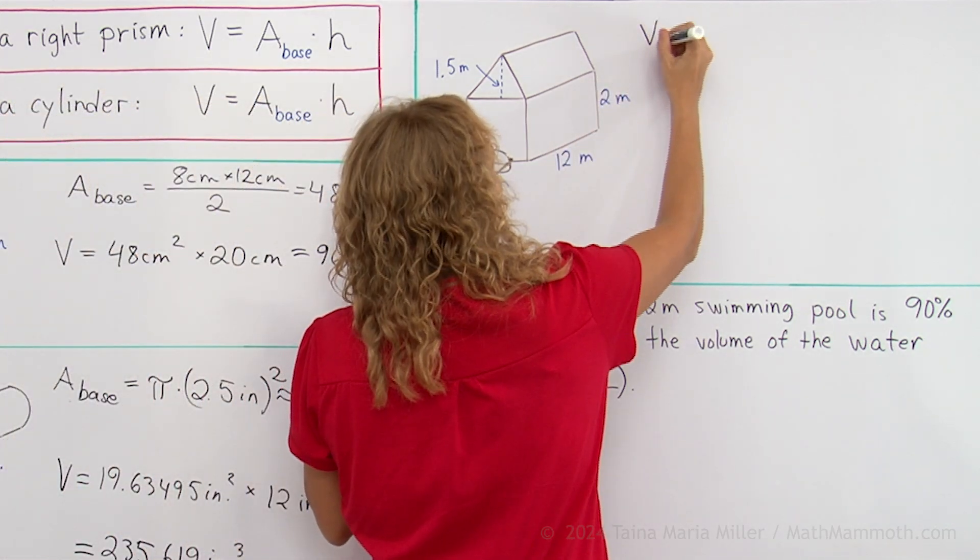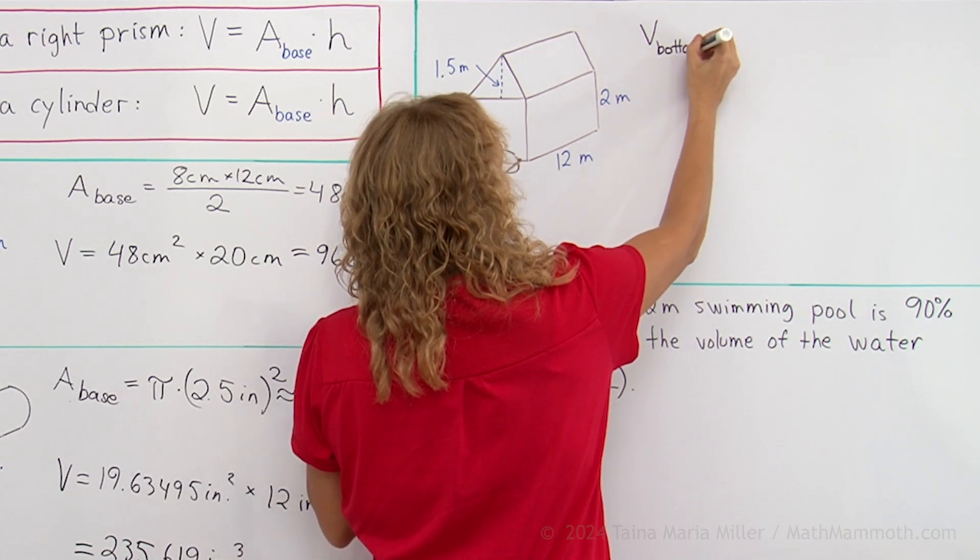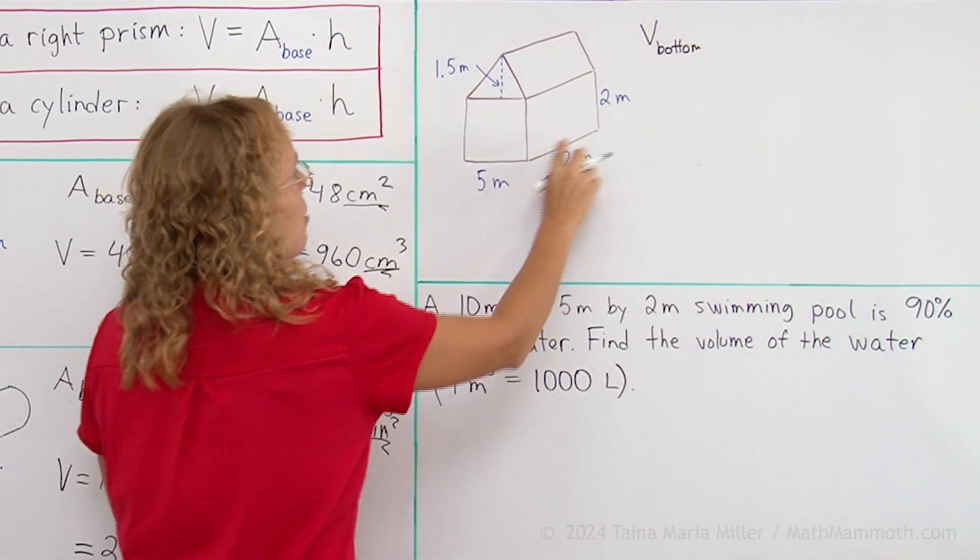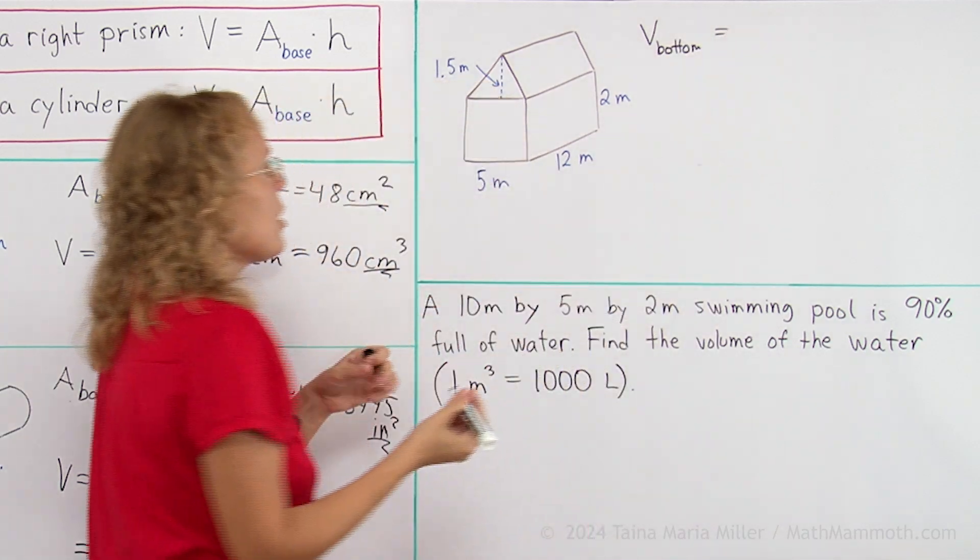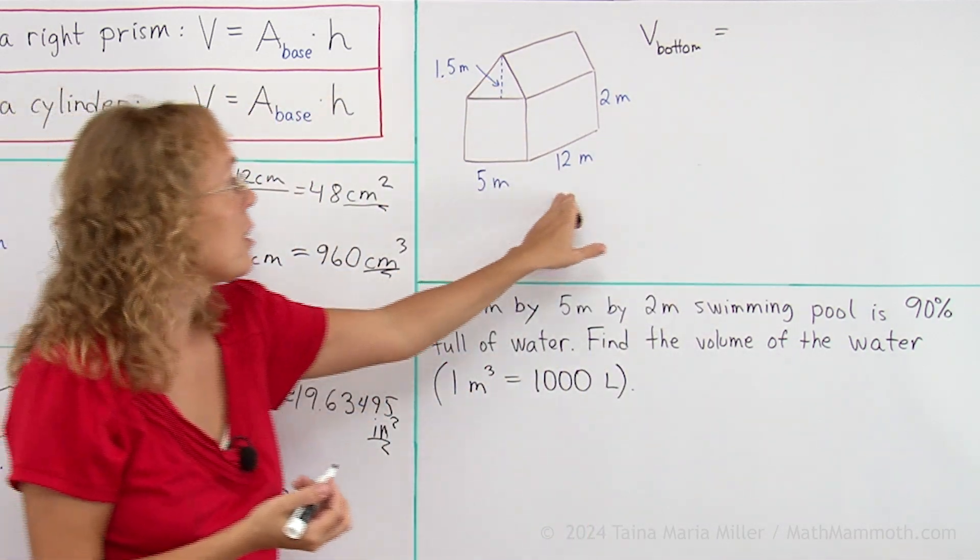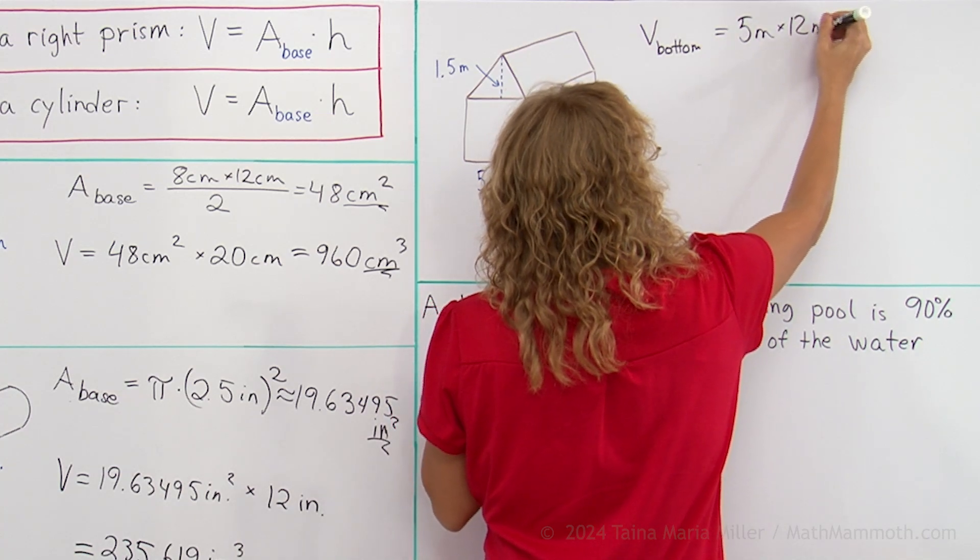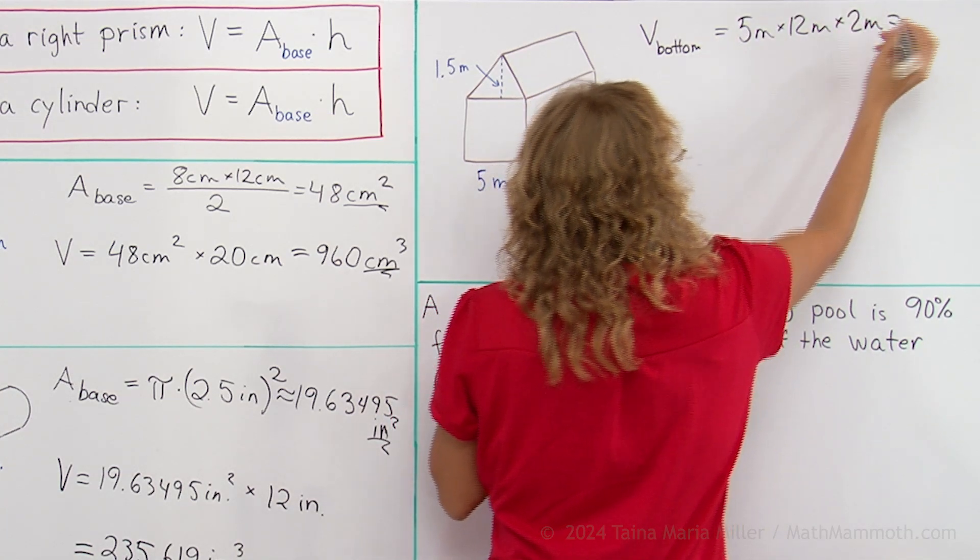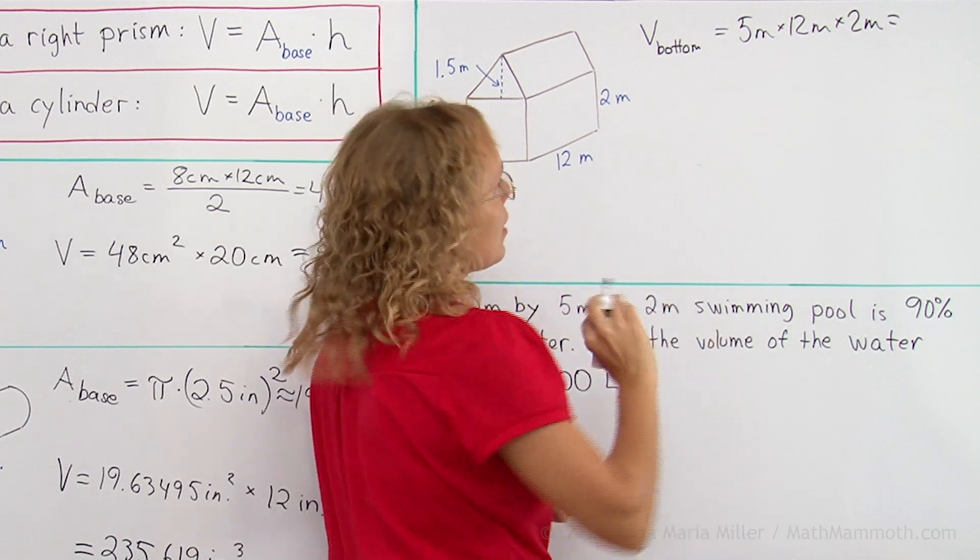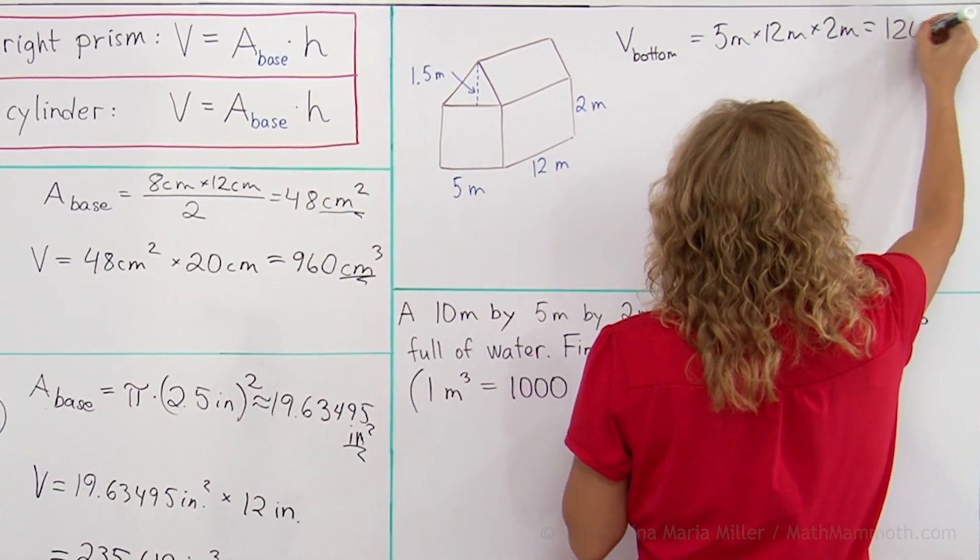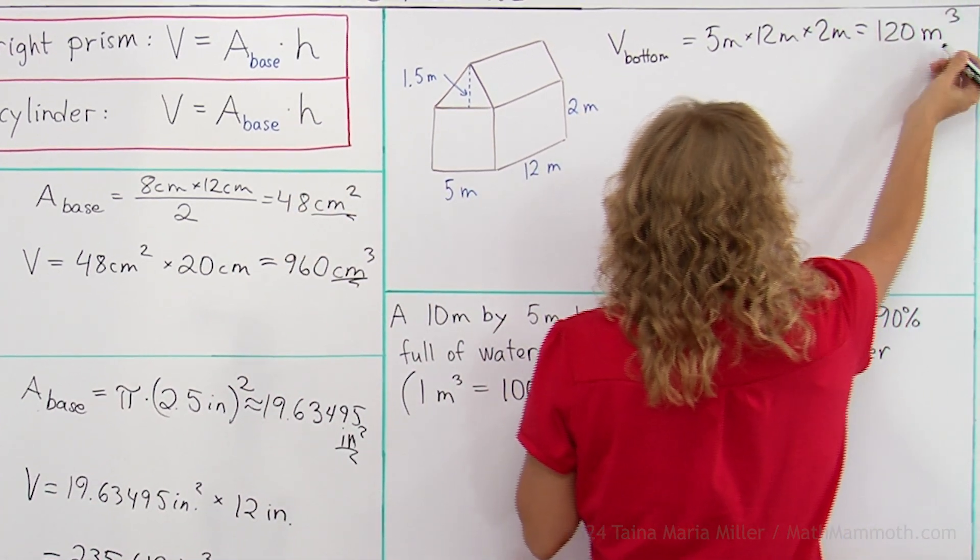Okay, so let's first calculate volume of the bottom part, this here, that is like a box. And of course that, you just multiply these three dimensions here, 5 meters times 12 meters times 2 meters. 5 times 2 is 10, 10 times 12 is 120, and cubic meters, notice.